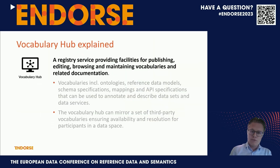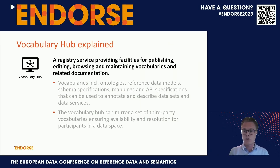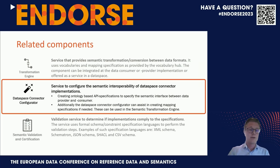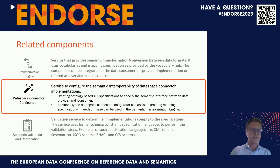For that, we position the Vocabulary Hub as a registry service providing facilities for publishing, editing, browsing, and maintaining vocabularies and related documentation — very much similar to the tools we've seen in previous presentations. Moving on, I would like to elaborate on configuring the connector and the APIs based on semantics and vocabularies in the hub. That's a component we've been calling the data space connector configurator — a service to configure semantic interoperability for that connector.